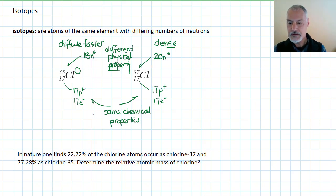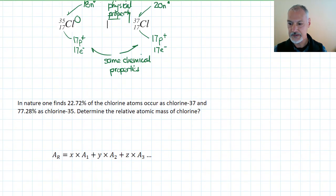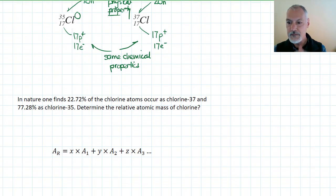Now if one goes out into nature and takes a look at how abundant these two isotopes are, so we'll do that in this next portion, we find out that 22% of the time chlorine is of this variety, this chlorine. And about 77% of the time chlorines exist in this variety. I'm asking you here to determine something called the relative atomic mass. Now a little bit about what that means.